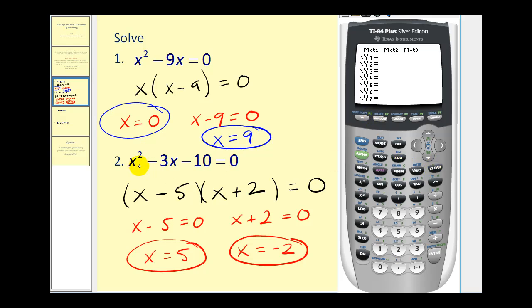Press y equals. Type in x squared minus three x minus ten into y one. Press graph. We're looking for an x-intercept at five and negative two, and it looks very good from here. The calculator does have a feature to calculate these x-intercepts, but we'll do that when the solution is a fractional value.